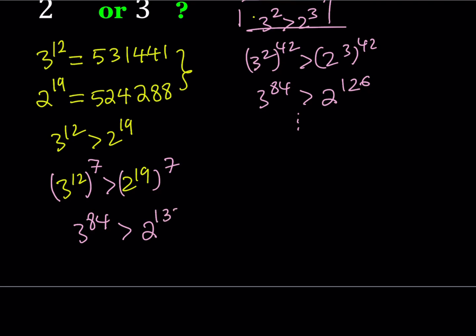Alright, great. So 2 to the power 133. Obviously, 3 to the power 84 is greater than 2 to the power 126. We knew that, but we didn't know if this is still going to be greater than any larger power of 2.